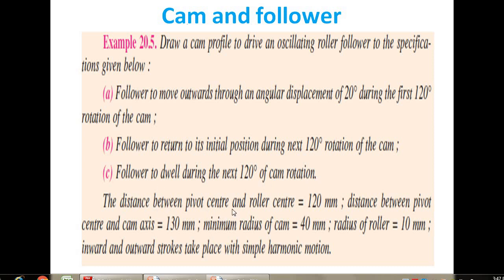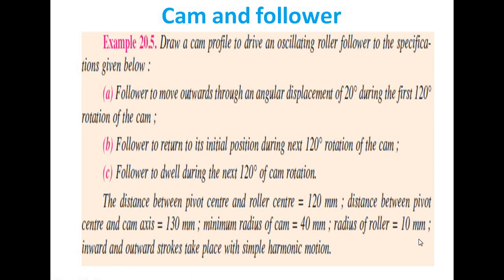The distance between the pivot center and the cam axis is 130 mm. Minimum radius of cam is 40 mm. The roller situated on the cam has a radius of 10 mm. Both inward and outward strokes take place with simple harmonic motion.